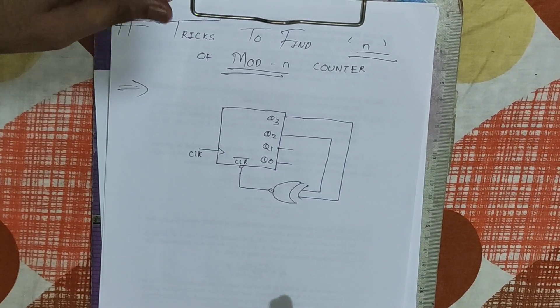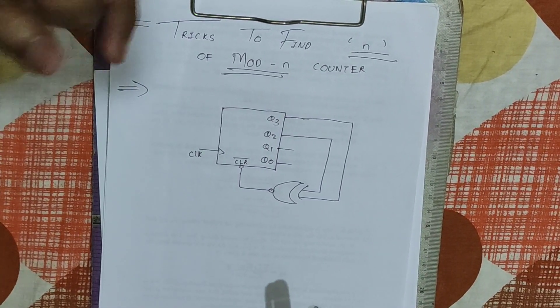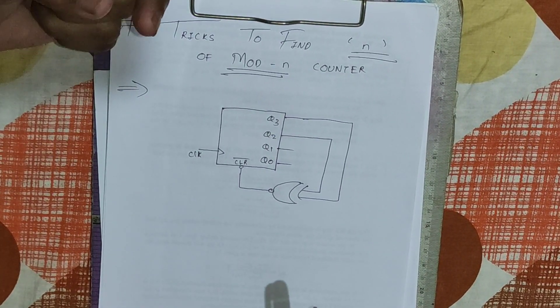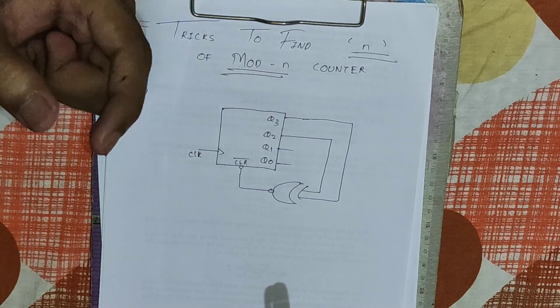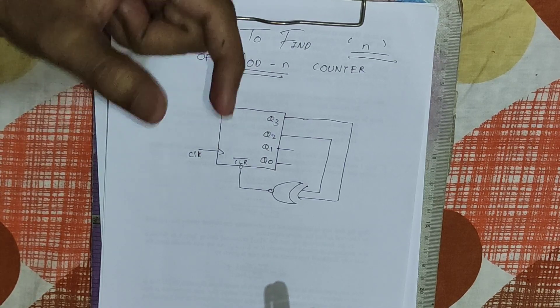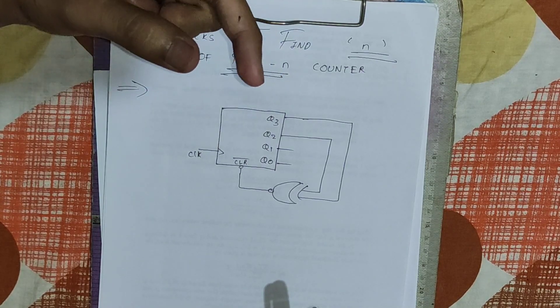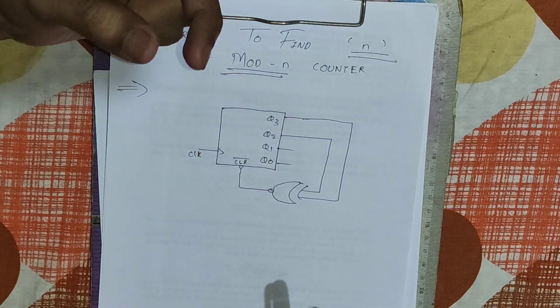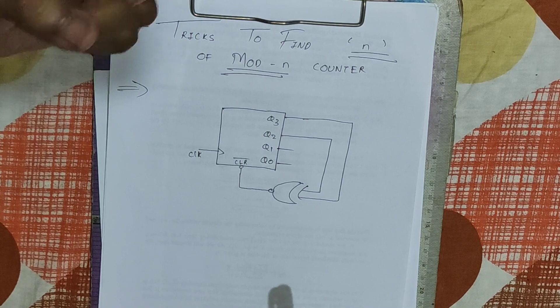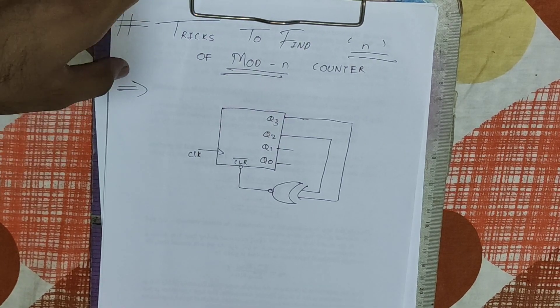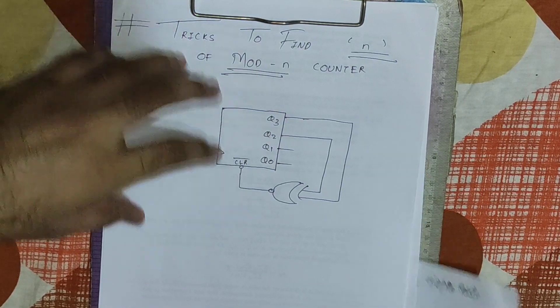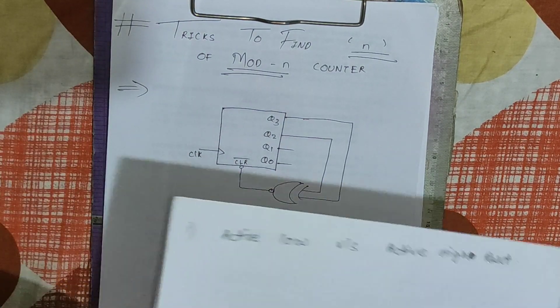Hello friends, today we will see the tricks to find the number of states that can be counted by a counter — basically the n of a mod-n counter. Before starting this video, let me clear some doubts.